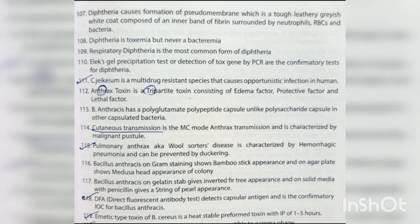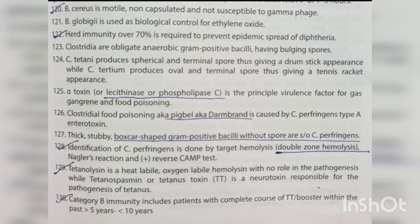Emetic type toxin of Bacillus cereus is a heat-stable preformed toxin with incubation period of 1–5 hours. B. cereus is motile, non-capsulated, and not susceptible to gamma phage. B. globigii is used as biological control for ethylene oxide. Herd immunity over 70% is required to prevent epidemic spread of diphtheria. Clostridia are obligate anaerobes and gram-positive bacilli. C. tetani produces spherical and terminal spores giving a drumstick appearance, while C. tertium produces oval and terminal spores giving a tennis racket appearance.